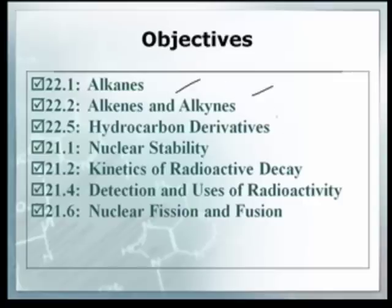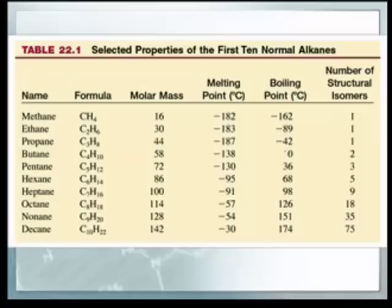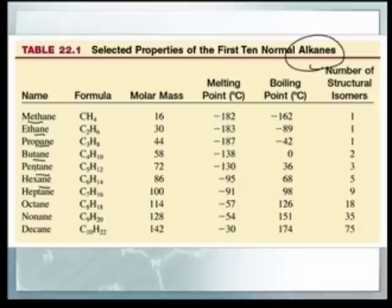The objectives here are alkanes, alkenes, and alkynes — you don't know what those mean yet, but you will. So what's a hydrocarbon? Hydrocarbons have hydrogen and carbon — hence the name. They're chemicals that have just hydrogen and carbon. You use hydrocarbons all the time. Examples include methane, ethane, propane, butane, pentane, hexane — they all end in '-ane' and they're all called alkanes.